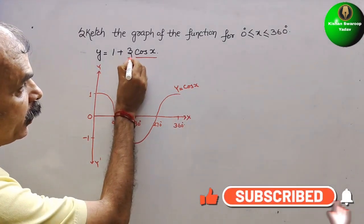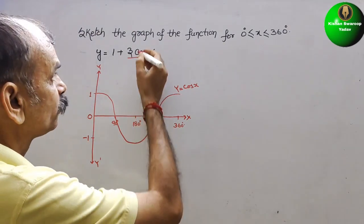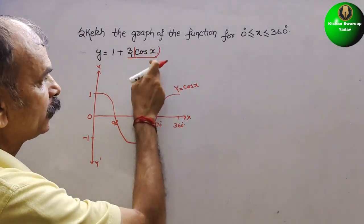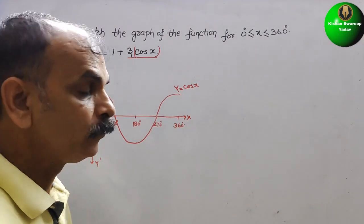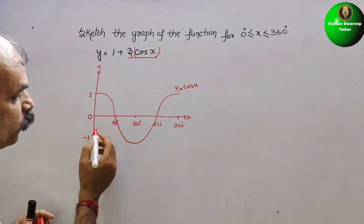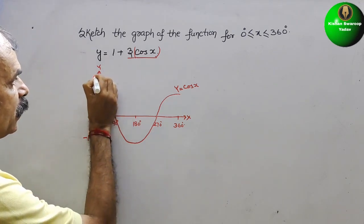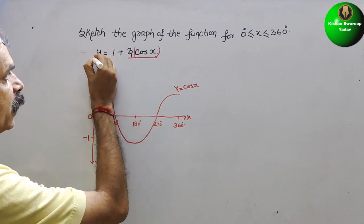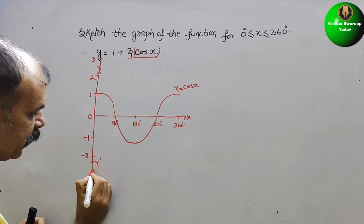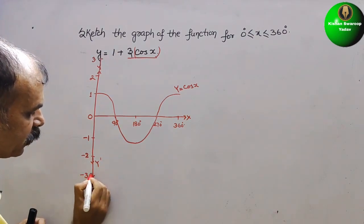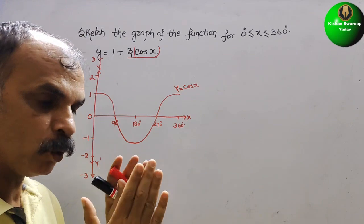Now the 3 means 3 × cos x. We have to multiply cos x by 3, so we increase the amplitude by 3 times. Here it was 1, now it goes to 3. Here it was -1, now it goes to -3. So the amplitude should increase from 3 to -3.